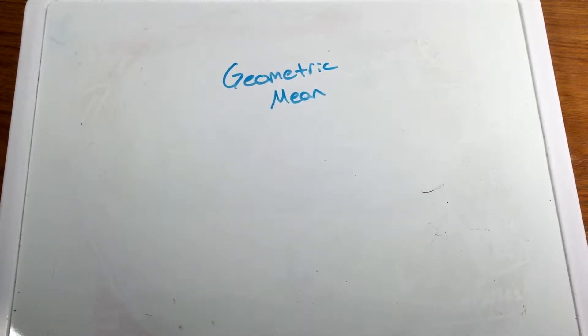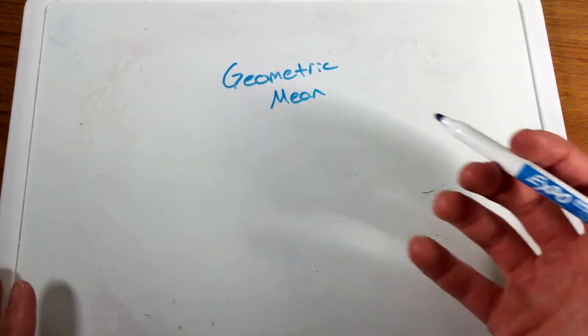What is the geometric mean? The geometric mean is a special little type of mean between two numbers.